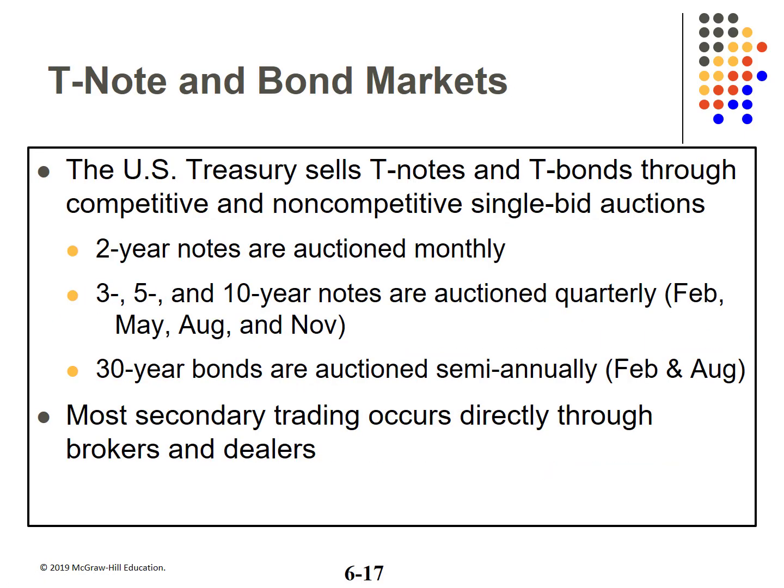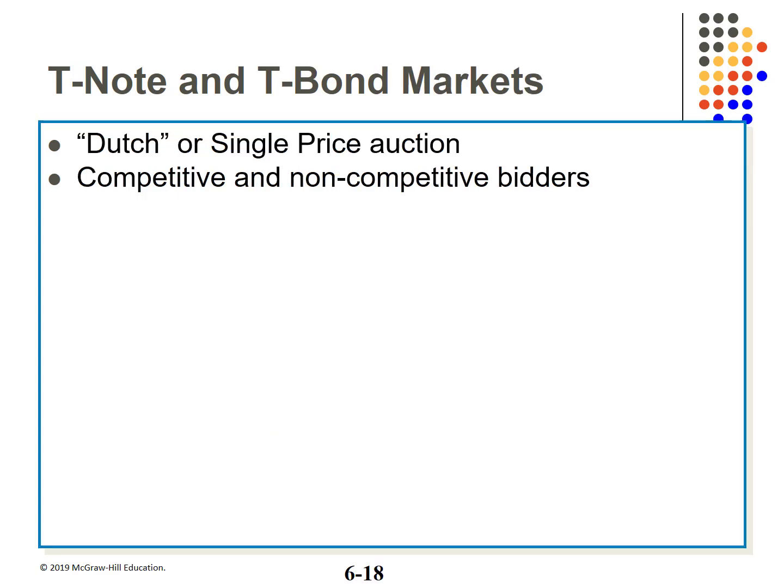Treasury notes and bonds are sold through auctions like the process for T-bills. 2-year notes are auctioned monthly; 3, 5, and 10-year notes are auctioned quarterly. All treasuries are actively traded, but primarily through brokers and dealers. Treasuries are sold through the Dutch or single-price auction process.